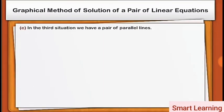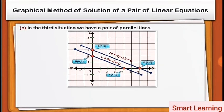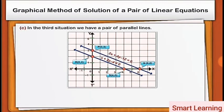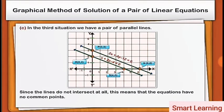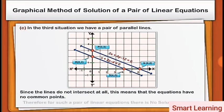In the third situation, we have a pair of parallel lines. Since the lines do not intersect at all, this means that the lines have no common points. Therefore, for such a pair of linear equations, there is no solution.